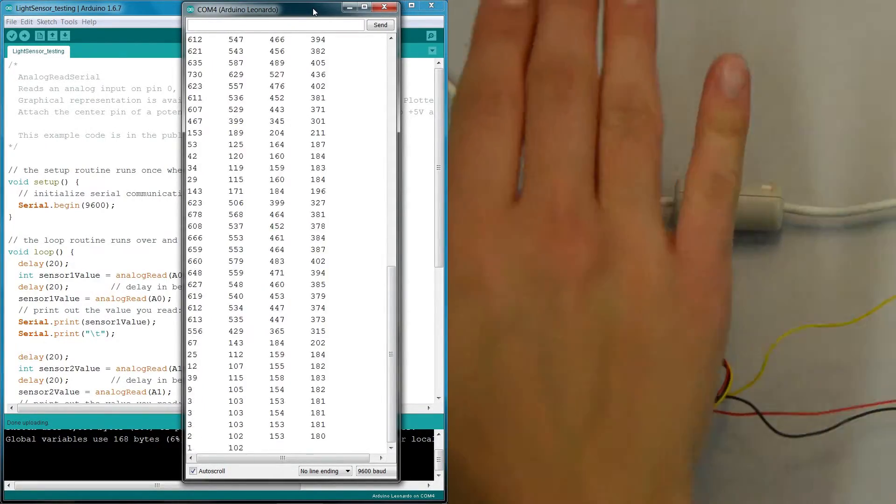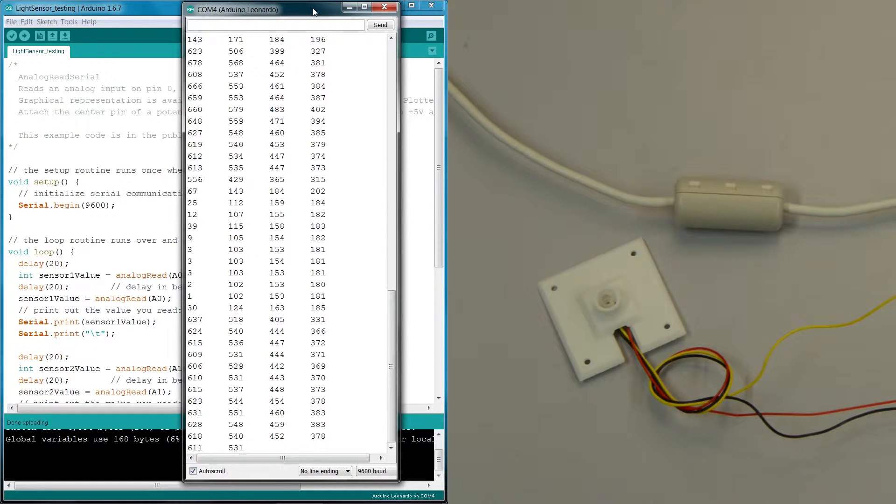Each column of data is a light measurement of the sensors in the order A0, A1, A2, A3.